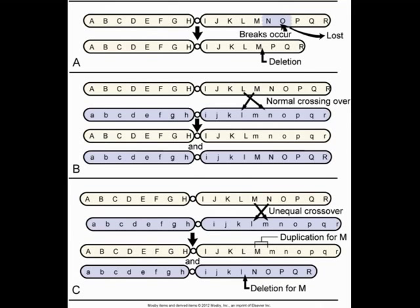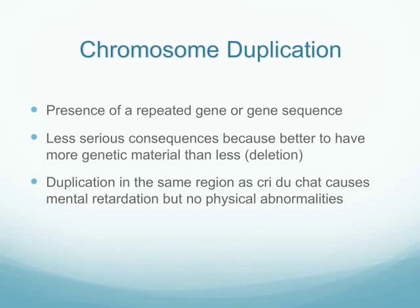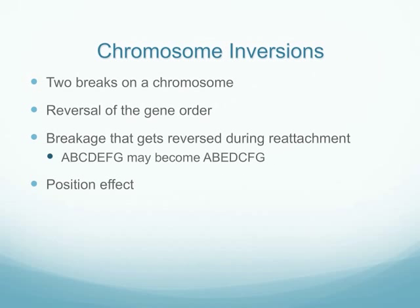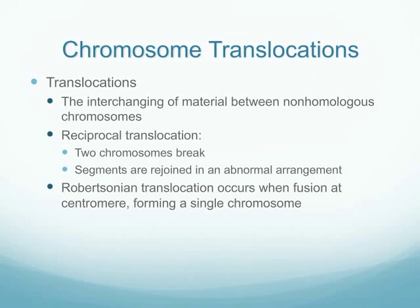Having a duplication of genetic material generally results in that gene still being expressed. But if part of the material is deleted, that portion of the gene won't be expressed during replication. We can also have inversion of genetic material, where during replication part of the sequence is flipped rather than restoring its original order. Another type of abnormality is translocation, where genetic information is rejoined in an abnormal arrangement.